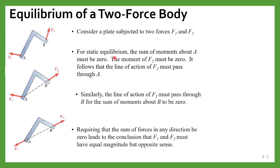For static equilibrium, the sum of moments about A must be zero, because for equilibrium the sum of moments about any point plus the resultant force should be zero. So the sum of moments about A must be zero, or we can do it for B also — the sum of moments about B should also be zero.